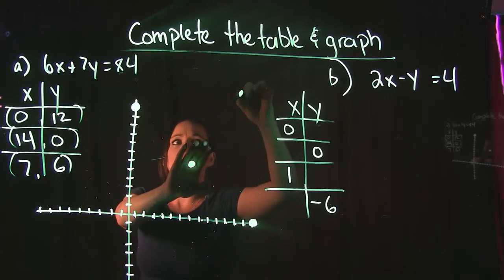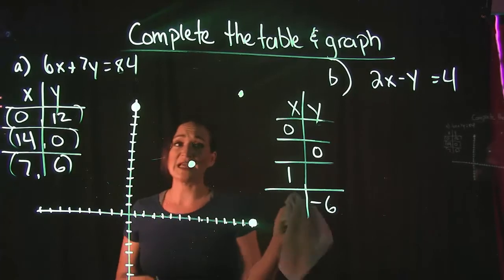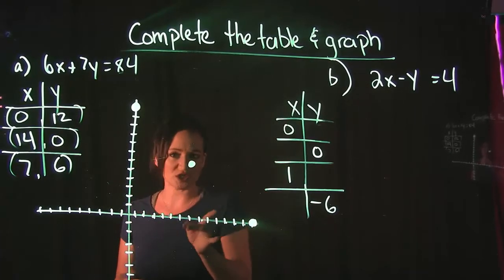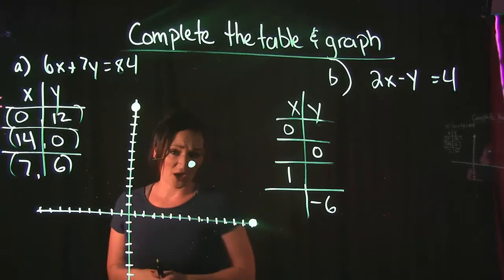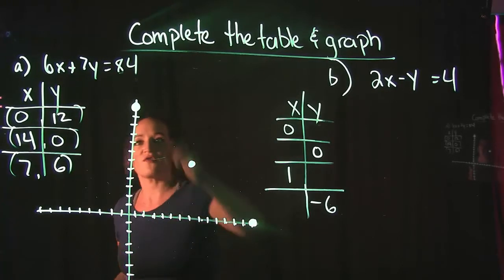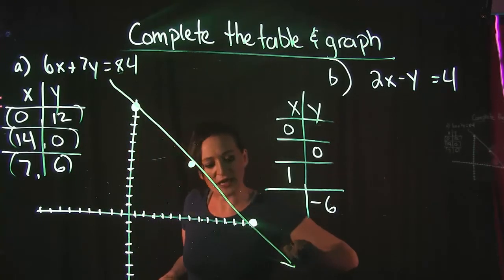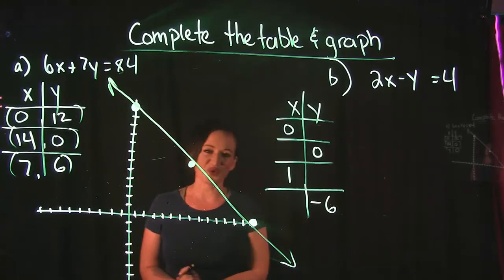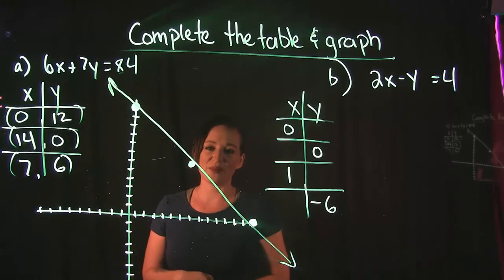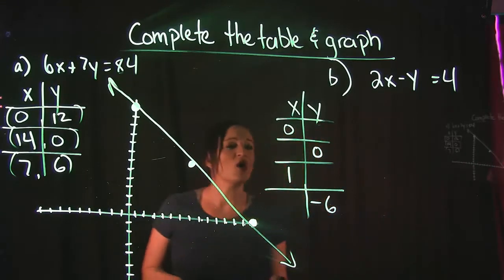If you have two points forming a line but one that's totally off in a different direction, go back and double-check your work — you probably made a calculation error. All three of our points look like they're forming a nice line, so all that's left is to connect the dots. That's what our line looks like for example A. Now let's move on to example B.